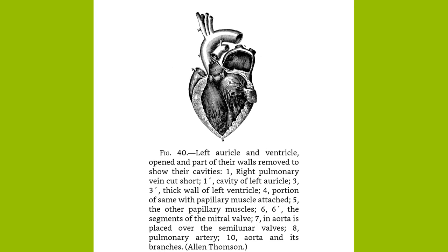From the ascending aorta come off the coronary arteries, which supply the heart muscle itself. As the coronary sinuses carry off the venous blood from the heart, from the arch are given off the left common carotid and left subclavian, and the innominate, which divides into the right common carotid and right subclavian.